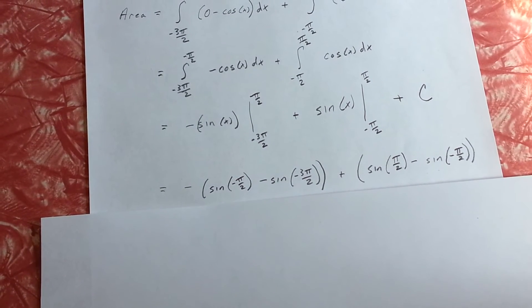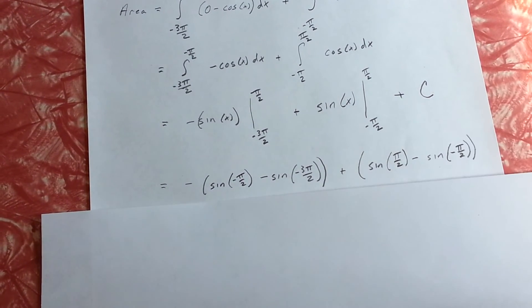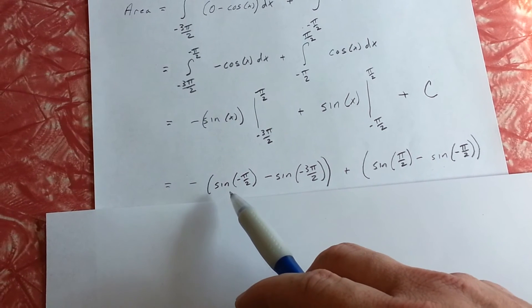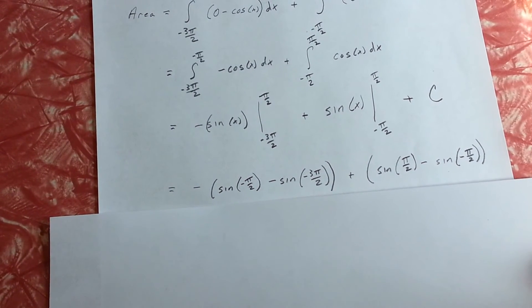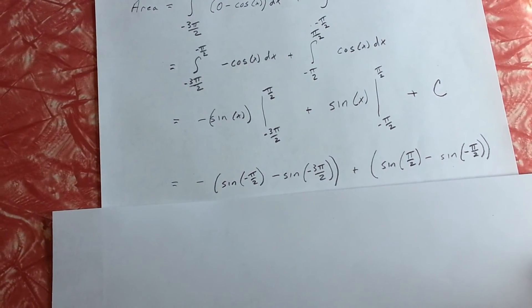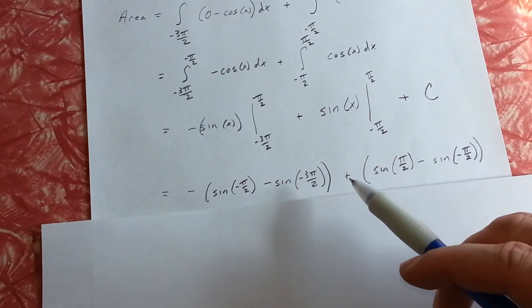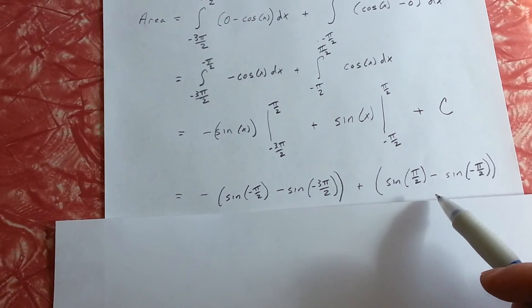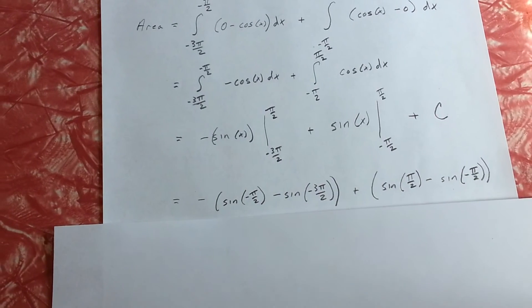We fill in and subtract: negative sine of negative pi over 2 minus sine of negative 3 pi over 2, plus sine of pi over 2 minus sine of negative pi over 2.